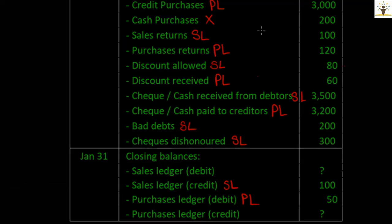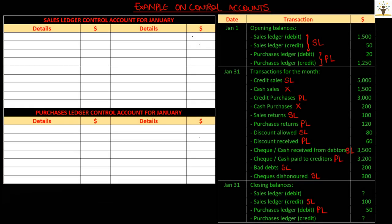Let us start preparing the sales ledger control account. Though we have decided which transactions appear in which type of control account, students do find it confusing to record transactions on the correct side. Just follow a simple rule: the sales ledger control account is prepared for debtors, and debtors have a debit balance. Any transaction that increases the amount receivable from the debtor will be debited, and any transaction reducing the debtor's balance will be credited in the sales ledger control account.